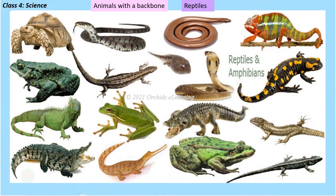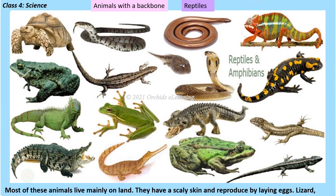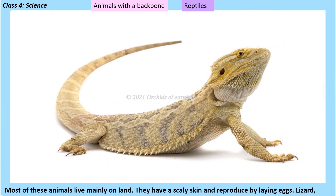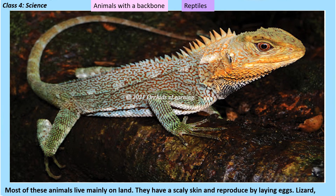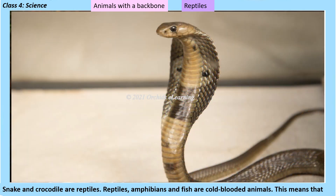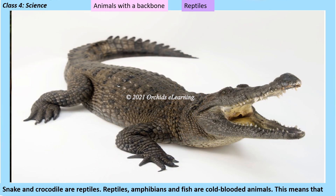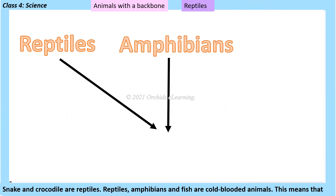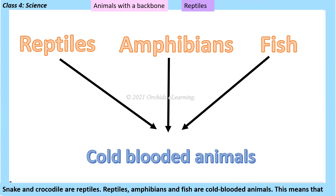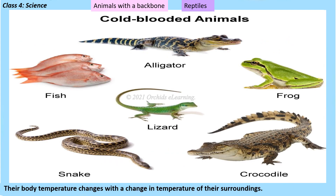Reptiles: most of these animals live mainly on land. They have scaly skin and reproduce by laying eggs. Birds, lizard, snake, and crocodile are reptiles. Reptiles, amphibians, and fish are cold-blooded animals, meaning their body temperature changes with the temperature of their surroundings.